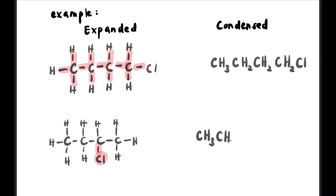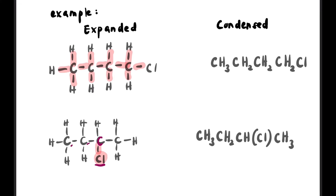If Cl is in the middle — it looks like a branch — we write it as CH3CH2CH(Cl)CH3, putting the branch in brackets. And if you see repeating groups like CH2 appearing twice, you can simplify it: CH3(CH2)2CH2Cl. Remember, repeating groups go in brackets with a subscript number.